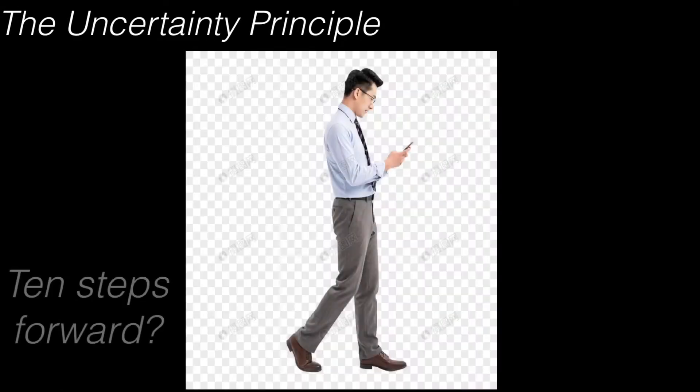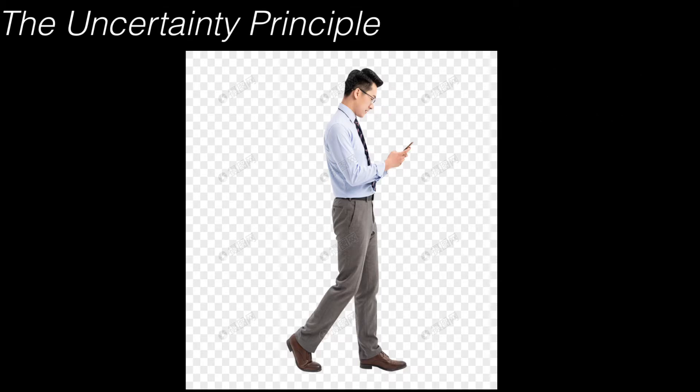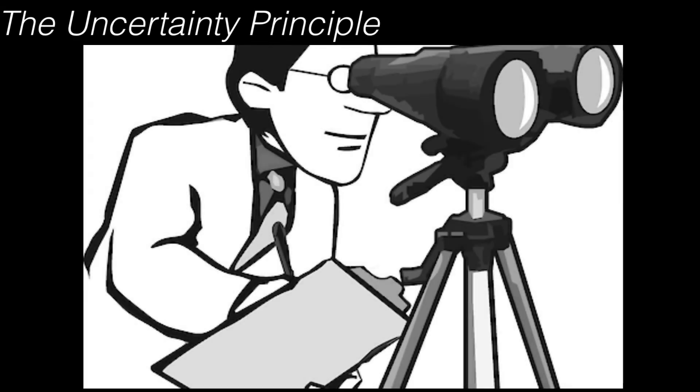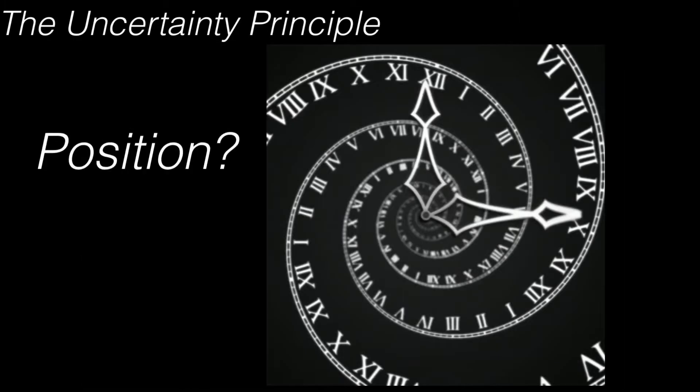He can go 10 steps forward without taking a step back. He can be somewhere in the middle, right? He can also be somewhere behind where he started. So in here, the position becomes a range of possibilities. Unless we take a look or take an observation of where the person is, we don't know where he is.